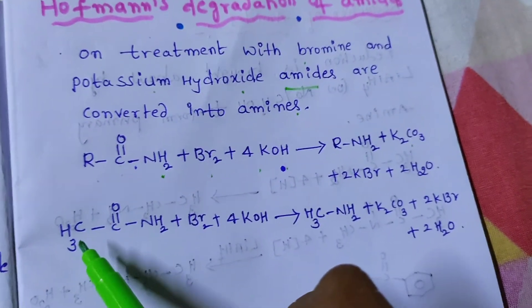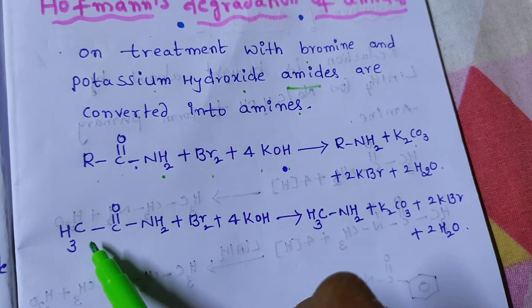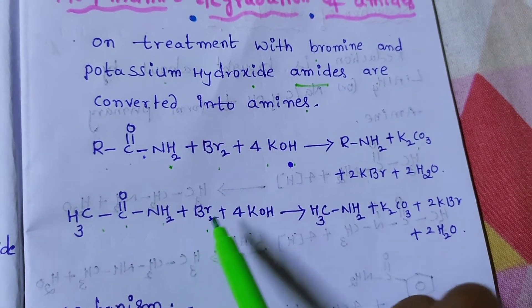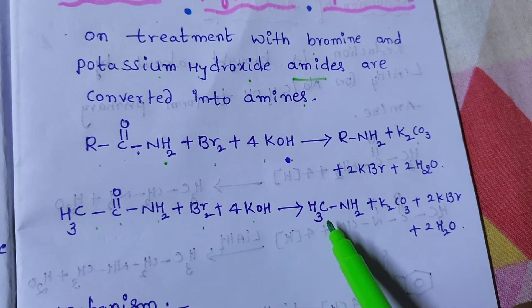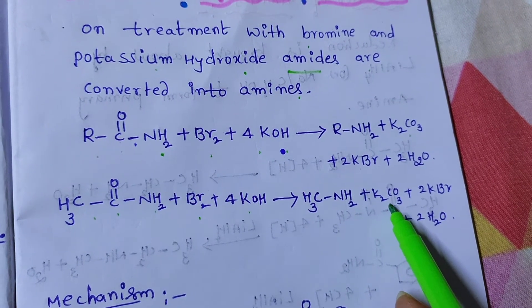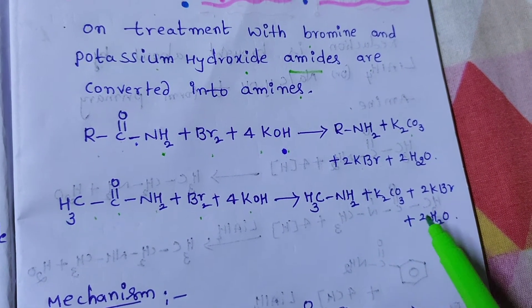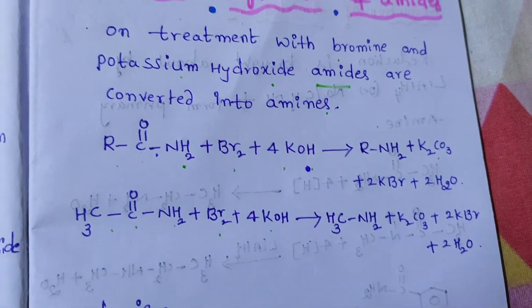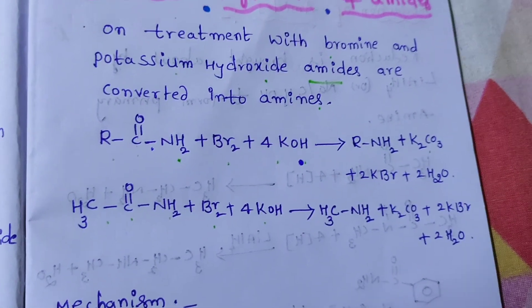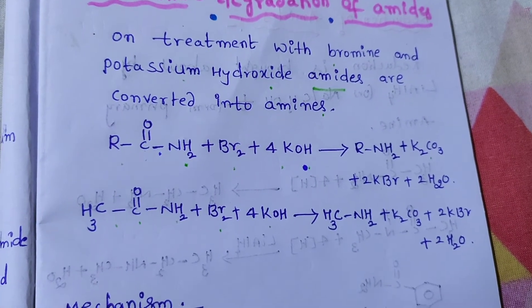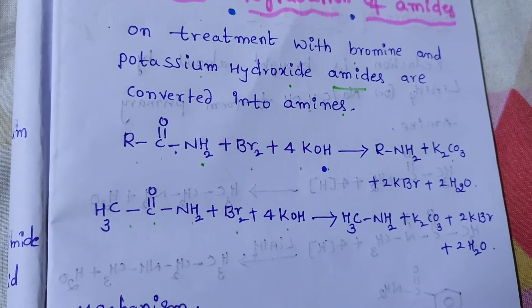In place of R, just we take this CH3 group. CH3-C double bond O-NH2 plus Br2, 4KOH and we get CH3-NH2 plus K2CO3, 2KBr and 2H2O. Just now, I am going to discuss the mechanism. What steps are involved in this reaction?